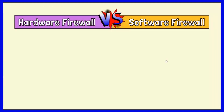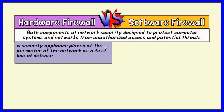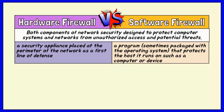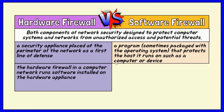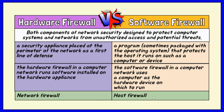Firewalls can be either software or hardware, though it's best to have both. Hardware firewalls are appliances placed at the perimeter of the network as a first line of defense. A software firewall is a program, sometimes packaged with the operating system on home or personal devices, and regulates traffic through port numbers and applications. A hardware firewall runs software installed on a hardware appliance, while a software firewall uses a computer as the hardware device. For this reason, software firewalls are often referred to as host firewalls and hardware firewalls as network firewalls.